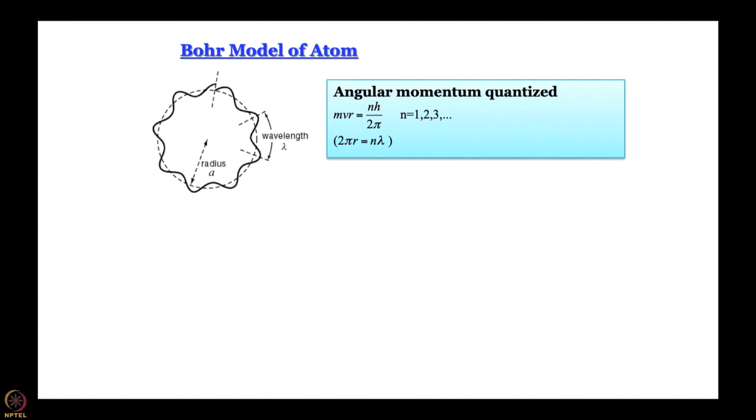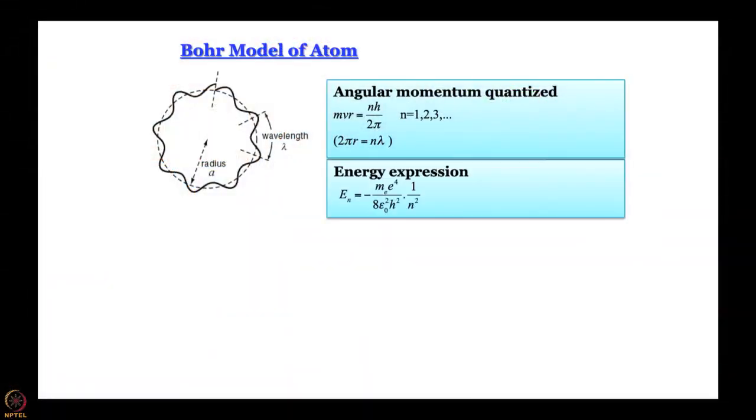An electron can only reside in stationary states or allowed orbits where mvr = nh/2π. When it jumps from one stationary state to the other, the difference in energy is either emitted or absorbed as light depending on which energy state is higher. It is a pity that we are not going to go into the detail of this here because we do not really use the Bohr model anymore. Whoever is interested can look up classical mechanics books and Bohr's papers. Bohr did a fairly simple calculation using the tools of classical mechanics - essentially algebra and more importantly calculus.